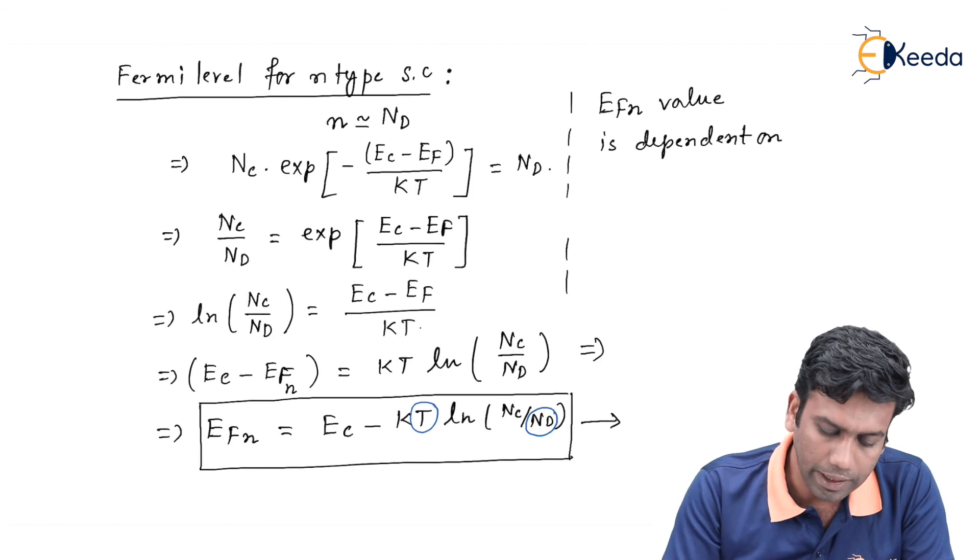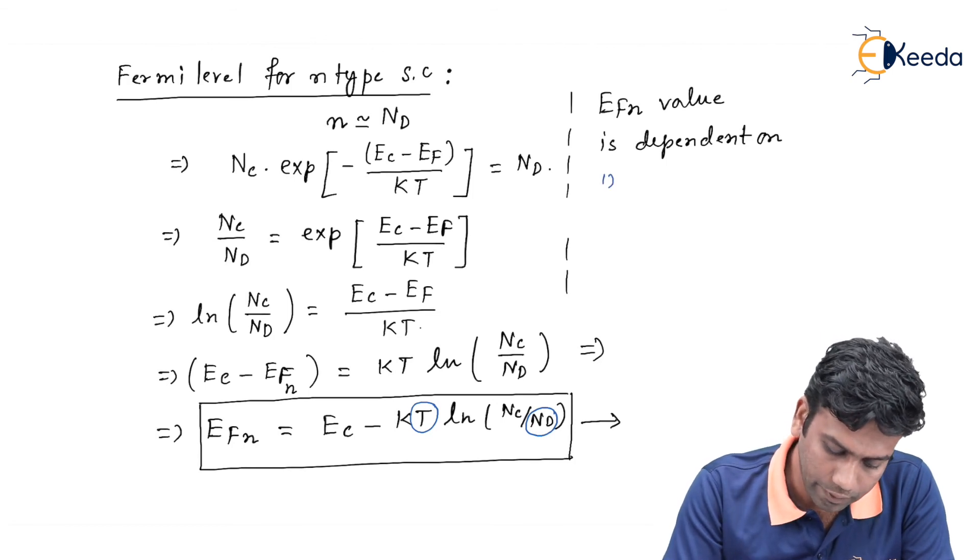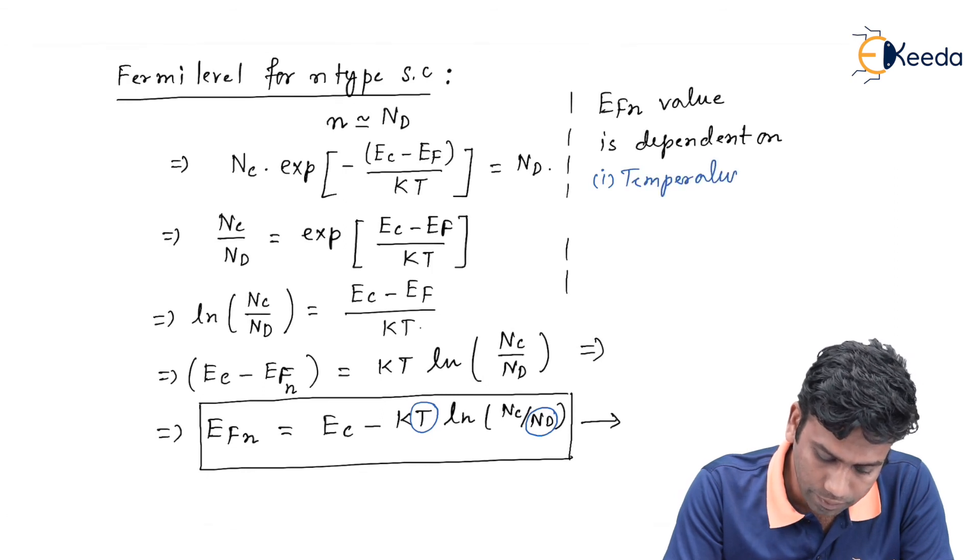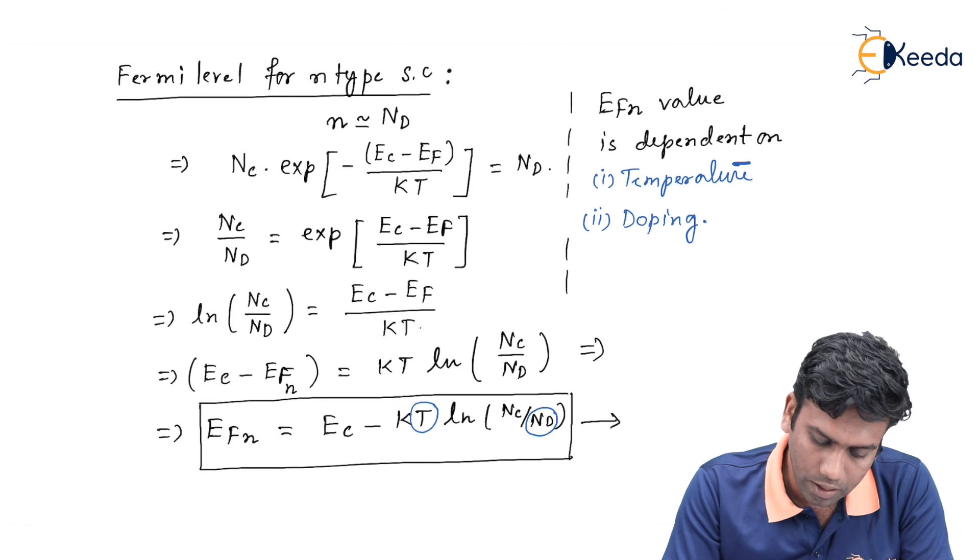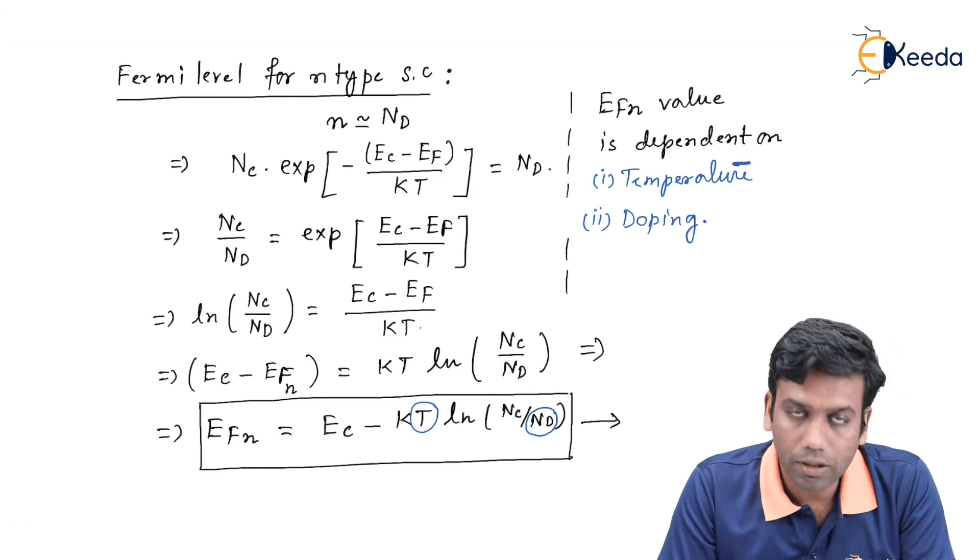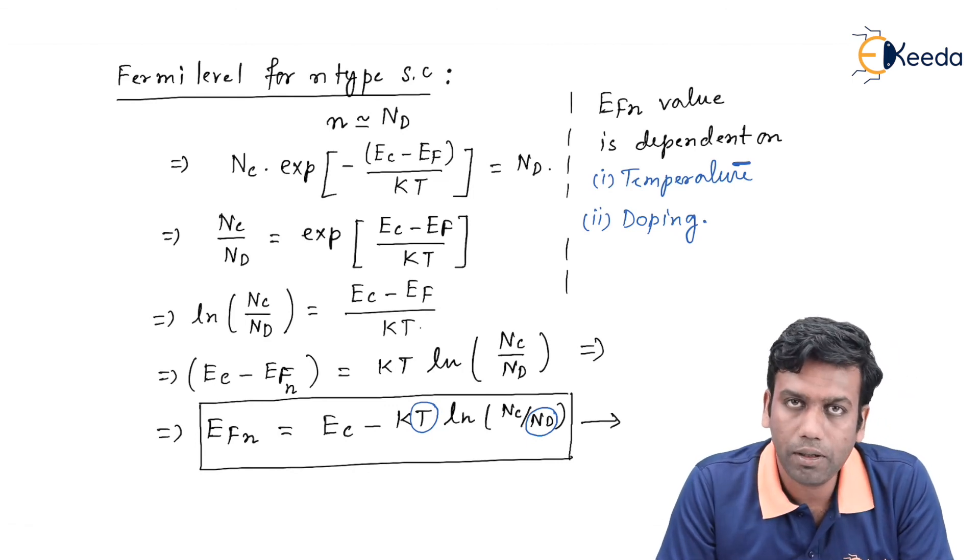We can say that it depends on two factors: first one is the temperature and the second one is the doping. So this is all about the Fermi level of an n-type semiconductor. Thank you.